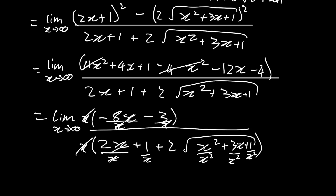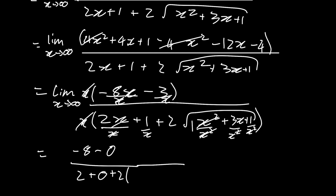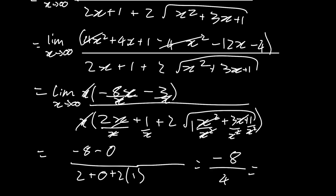Those x's cancel, those x squareds cancel, leaving us with negative 8 in the numerator. As x approaches infinity, negative 3 over x approaches 0. In the denominator we keep the 2, and 1 over x approaches 0. Inside the square root we have 1, and 3 over x and 1 over x squared both approach 0. So we get 2 into the square root of 1, which is 2, giving a denominator of 4. The limit is therefore negative 8 over 4, which equals negative 2.